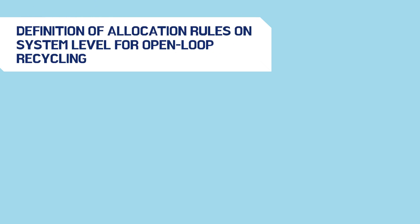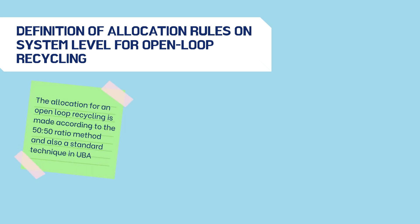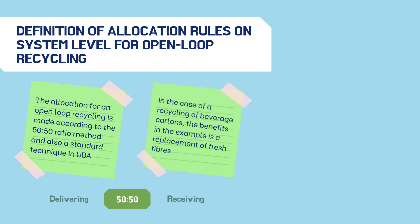Moving on to the definition of allocation rules on system level for open loop recycling. In this study, the allocation for open loop recycling is made according to the 50:50 ratio method, which is also a standard technique in UBA. Here, the use of secondary material is evenly distributed in a 50:50 relationship between the delivering and the receiving system.